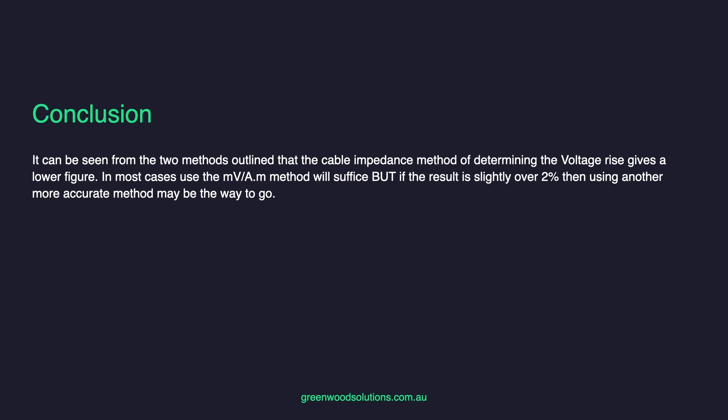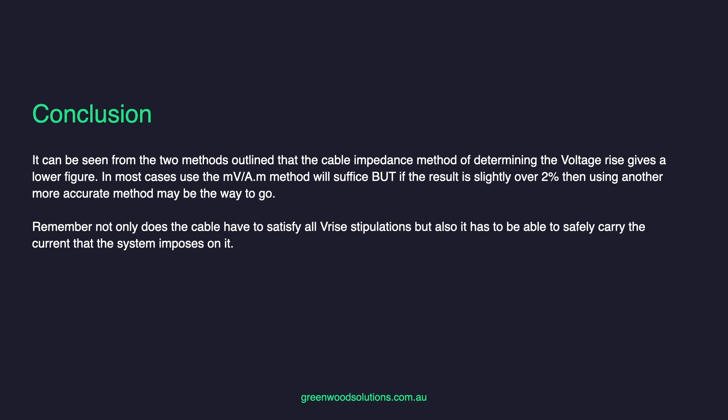It can be seen from the two methods that the cable impedance method of determining voltage rise invariably gives a lower figure. So in most cases, use the millivolt per amp metre method — this will suffice. But if the result is slightly over 2%, then using the more accurate cable impedance method may be the way to go. Remember, not only does the cable have to satisfy all the V rise stipulations, but it also has to safely carry the current that the system imposes on it.